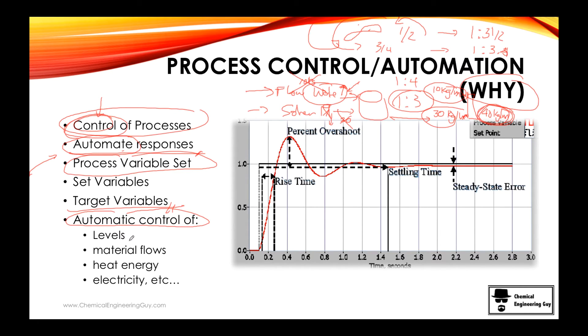Eventually, what you want to control in chemical engineering are plenty of variables, but the most common ones are levels, material flows, heat flow, electricity, temperature, pressure, volume, etc.